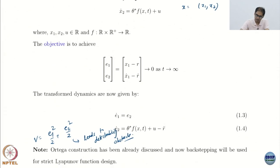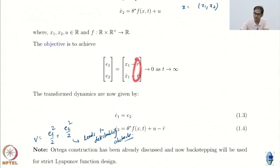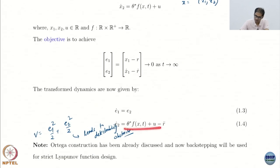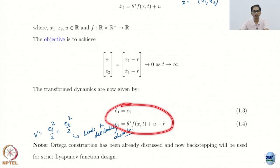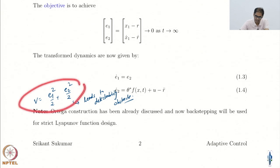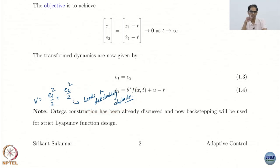What are the dynamics for the errors? We construct an error and write the dynamics of the error. E1 dot is E2 by virtue of the matching condition. E2 dot is X2 dot minus r double dot. So X2 dot minus r double dot gives me the new dynamics I am working with. I still have an unknown. If I did not have an unknown, I would simply cancel this and introduce the nice terms I wanted. I already say that this is a bad Lyapunov function for this system — it leads to the detectability obstacle. So we will use backstepping to construct Lyapunov functions here.